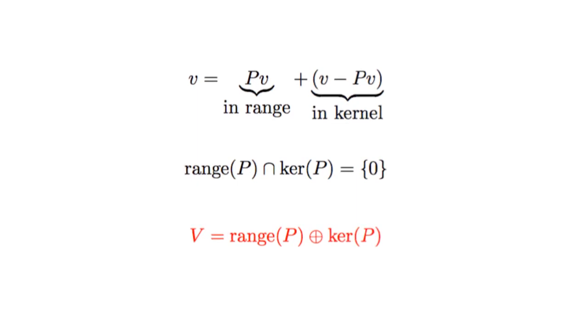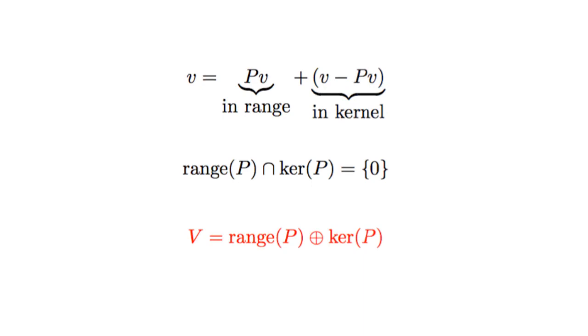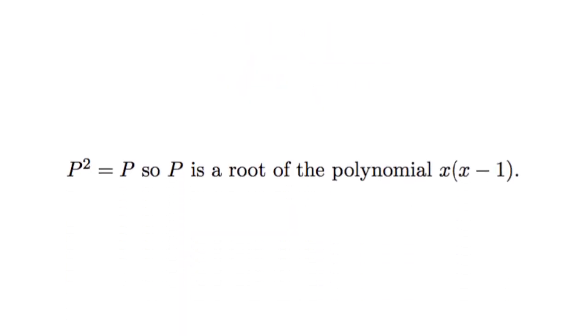So the previous slide showed us that any vector is a sum of something in the range and the kernel. And these two subspaces, the range and the kernel, intersect trivially. So V has to actually be the direct sum of the range and the kernel. And so if we take a basis for the range, which we showed was an eigenspace, and a basis for the kernel, which we showed was an eigenspace, union those two together will get a basis for V, which means V has a basis of eigenvectors. So because V has a basis of eigenvectors, P is actually a diagonalizable linear transformation.